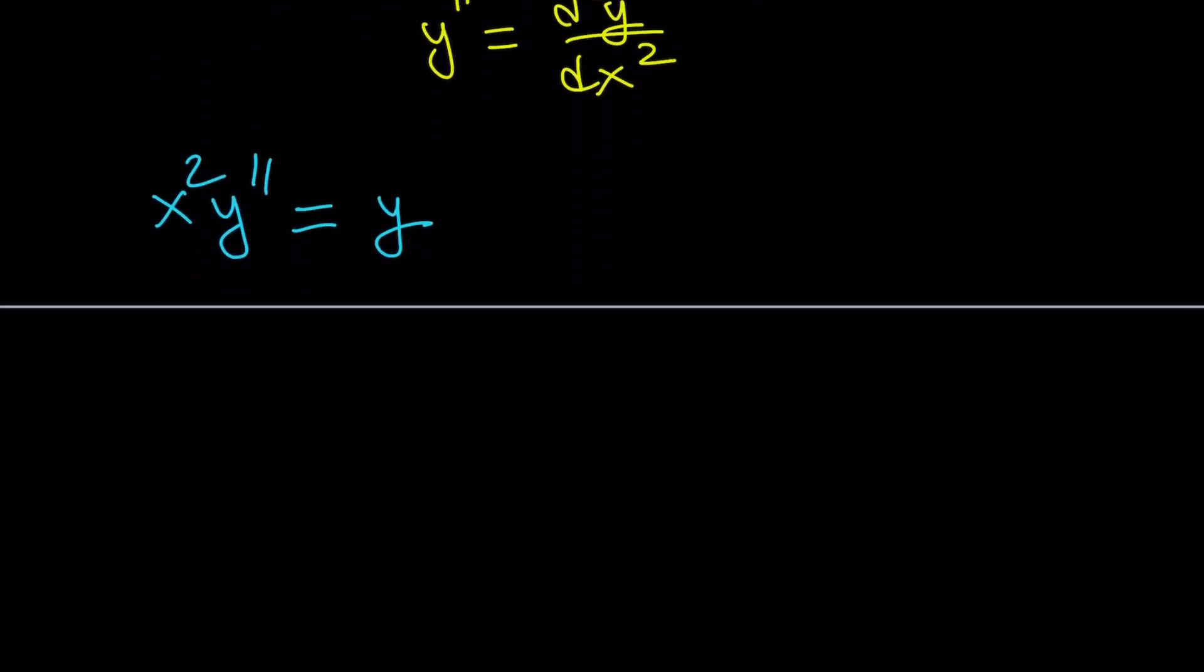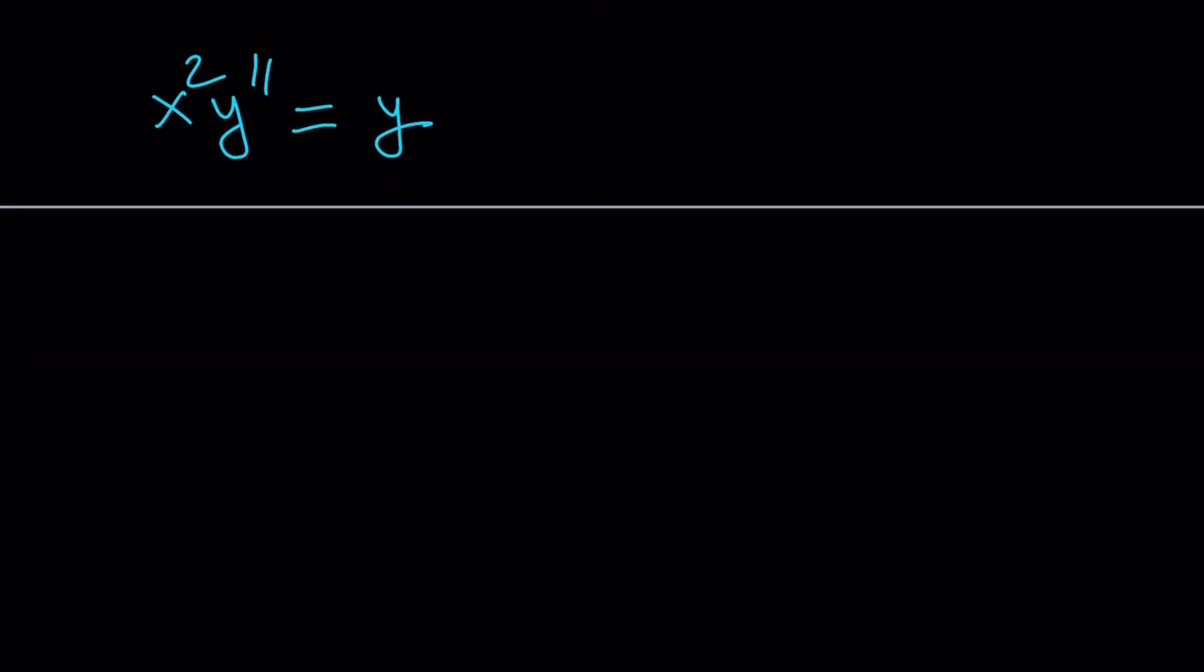So how about using something called power series? If you assume that y can be written as a power series, which is like an infinite polynomial, we can differentiate it, plug it in, and find the unknown coefficients. So this is how it usually works. We write y as, you know, something like n equals 0 to infinity, a sub n, x to the power n. This basically means that for n equals 0, we get a sub 0, and then a sub 1x, a sub 2x squared, a sub 3x cubed, so on and so forth. So the power and the subscript basically match up.